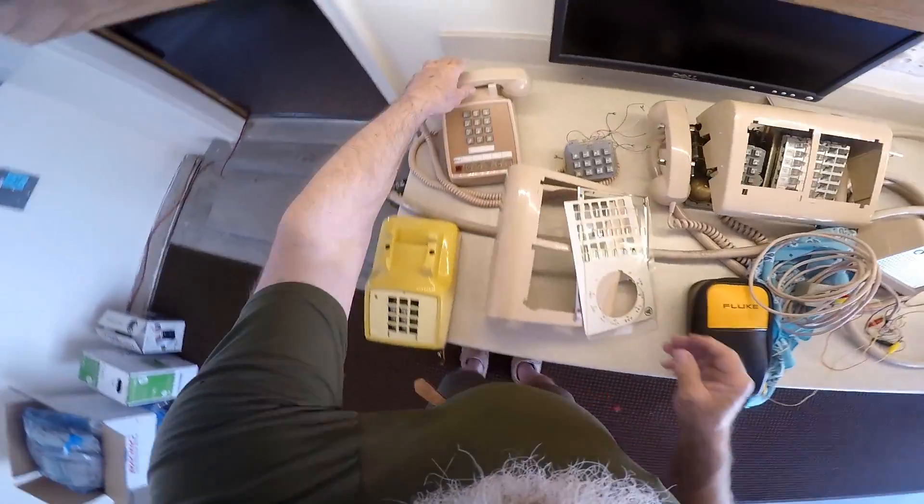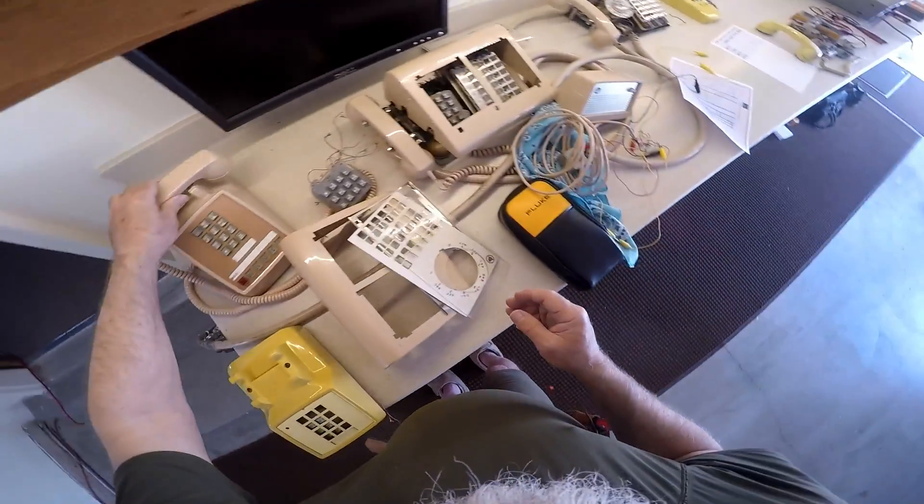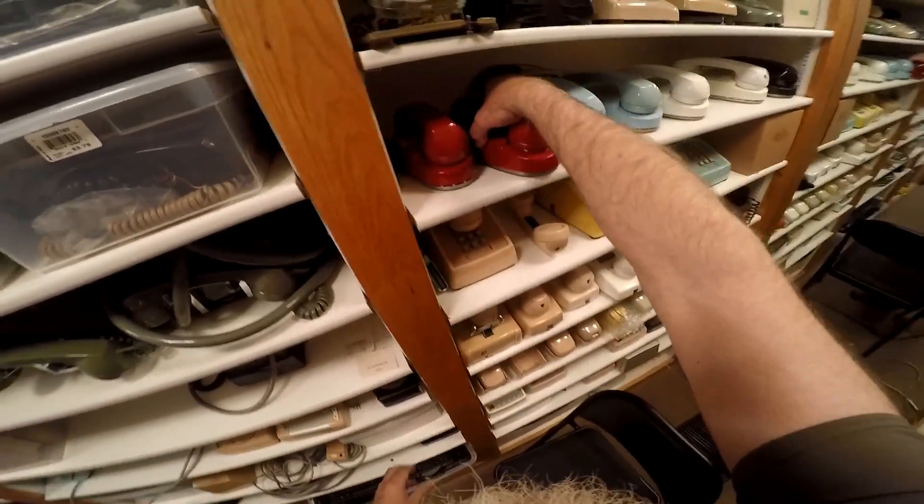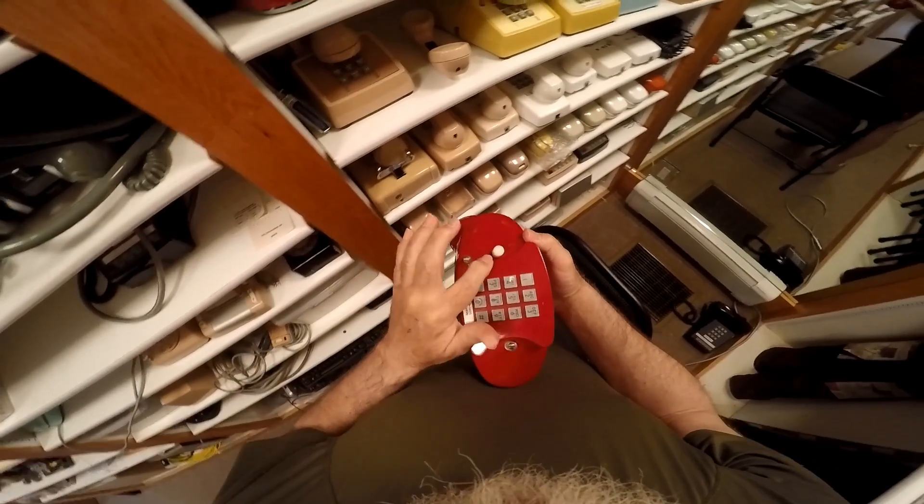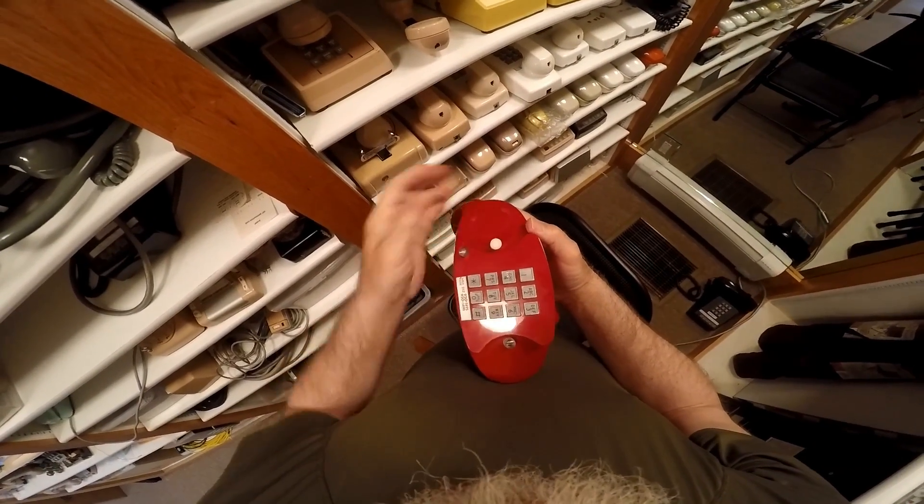For example, this one here. Nope, that one doesn't have it. I should have one in my storage room here. Here's one. This can be wired as either a hold or an exclusion.